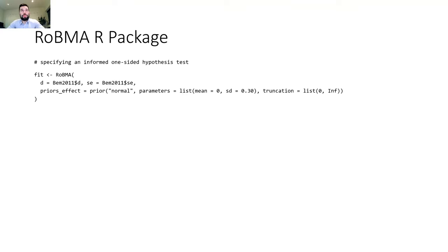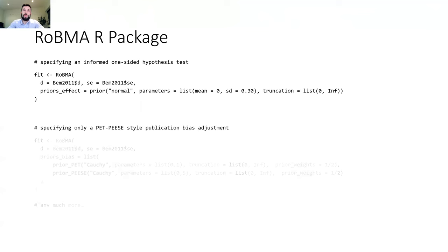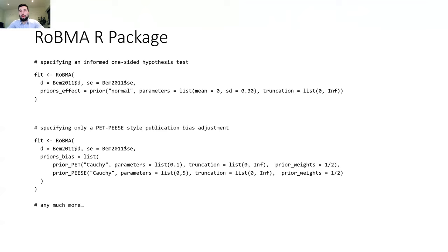The package allows multiple different specifications, and you can modify basically everything about the ensemble. For example, you can change the prior distribution for the effect and specify a truncated normal distribution that specifies a hypothesis of small effect sizes between 0, standard deviation of 0.3, truncated to the interval 0 to infinity. Or you can specify different ways of adjusting for publication bias — for example, specifying only PET and PEESE models. I recommend checking the vignettes of the package on CRAN for more customization examples.